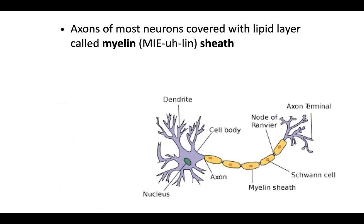The axon of most neurons is covered with a lipid layer called the myelin sheath.